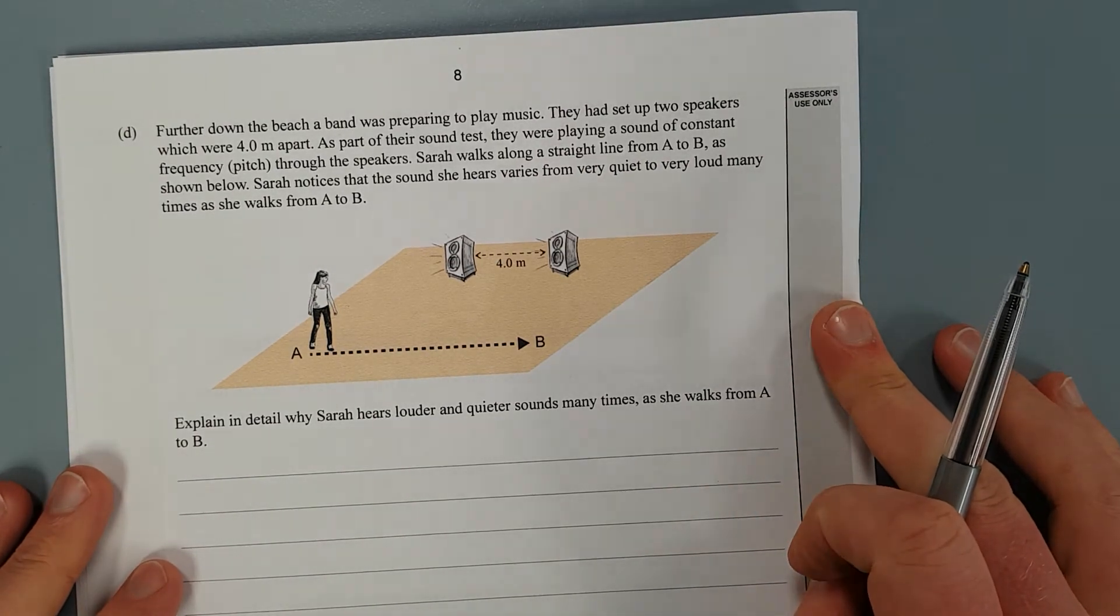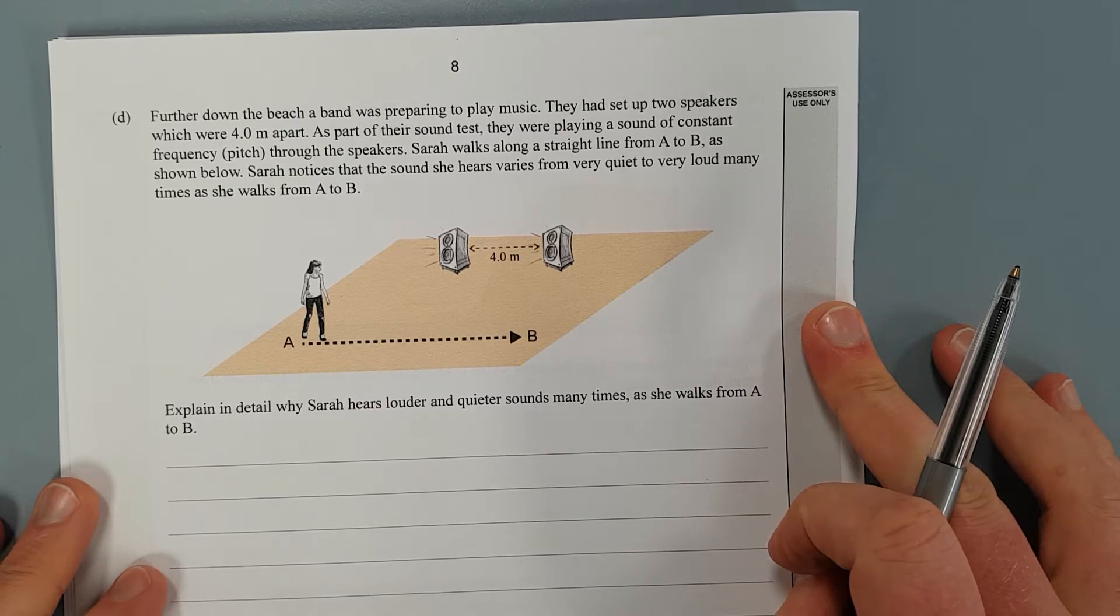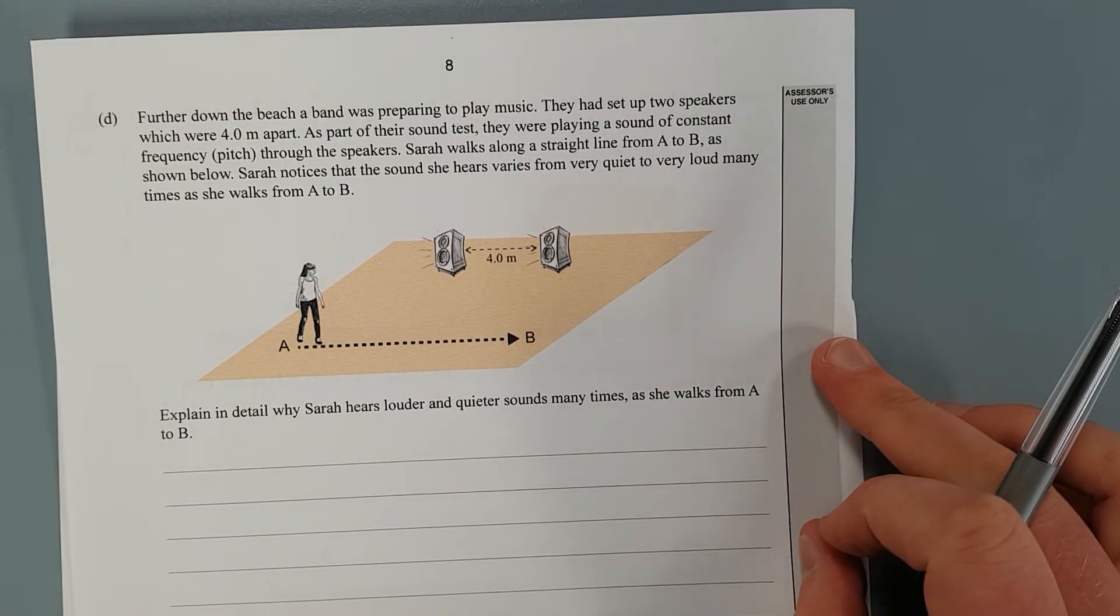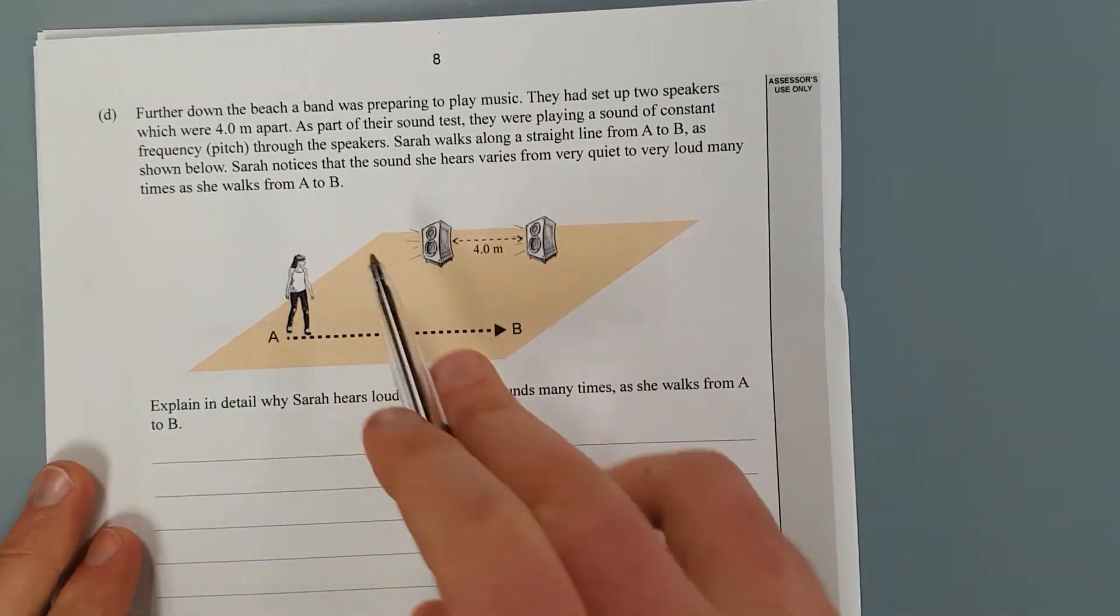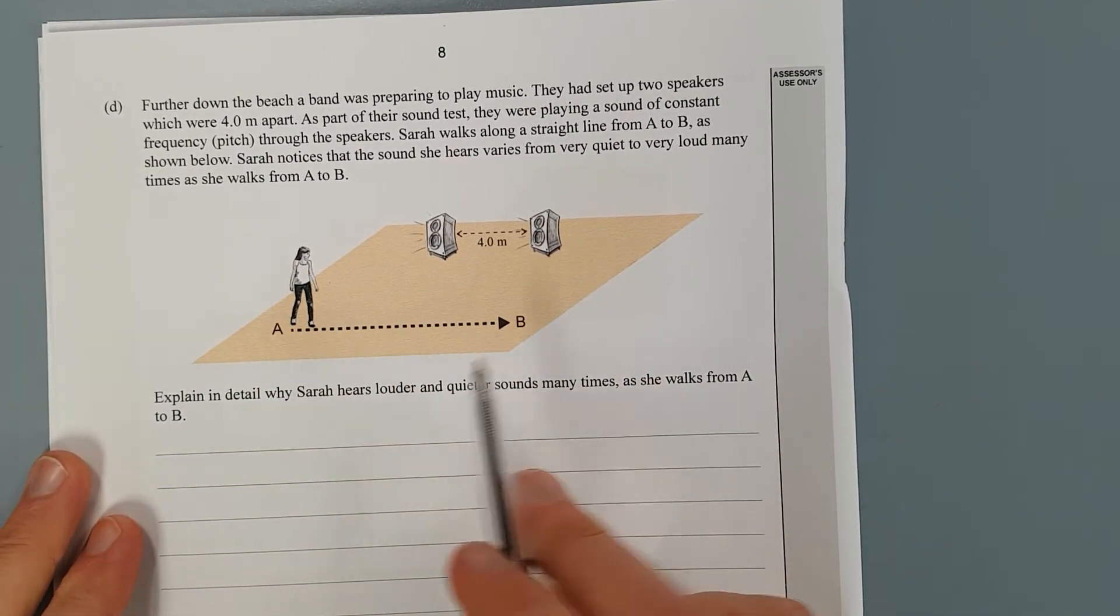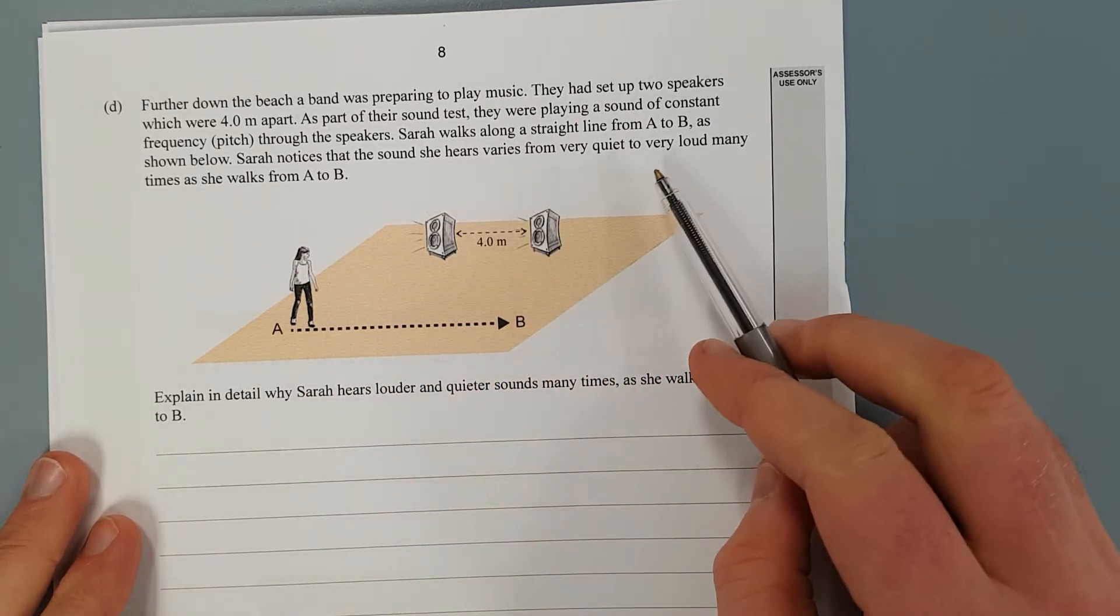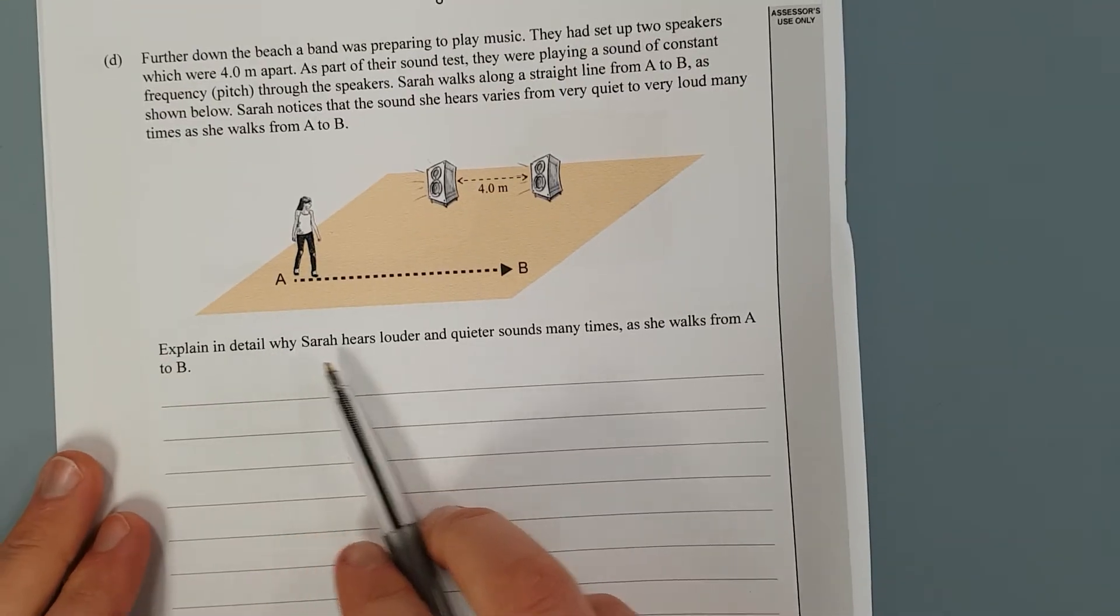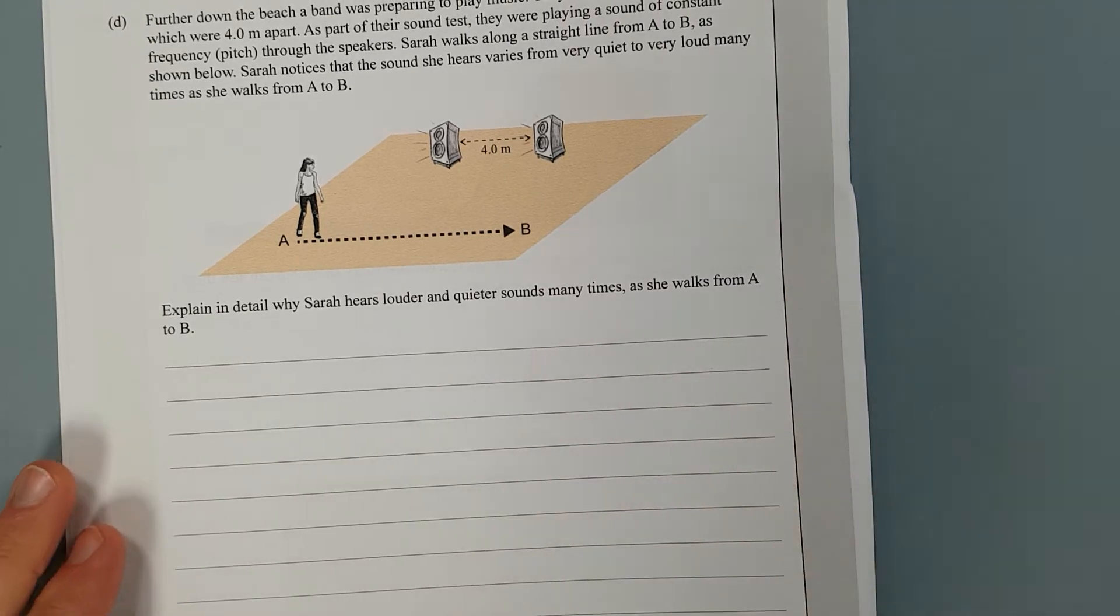Further down the beach, a band was preparing to play music. They had set up two speakers, which were four metres apart. As part of their sound test, they were playing a sound of constant frequency through the speakers. Sarah walks along a straight line from A to B. Sarah notices that the sound she hears varies from quiet to very loud many times as she walks from A to B.